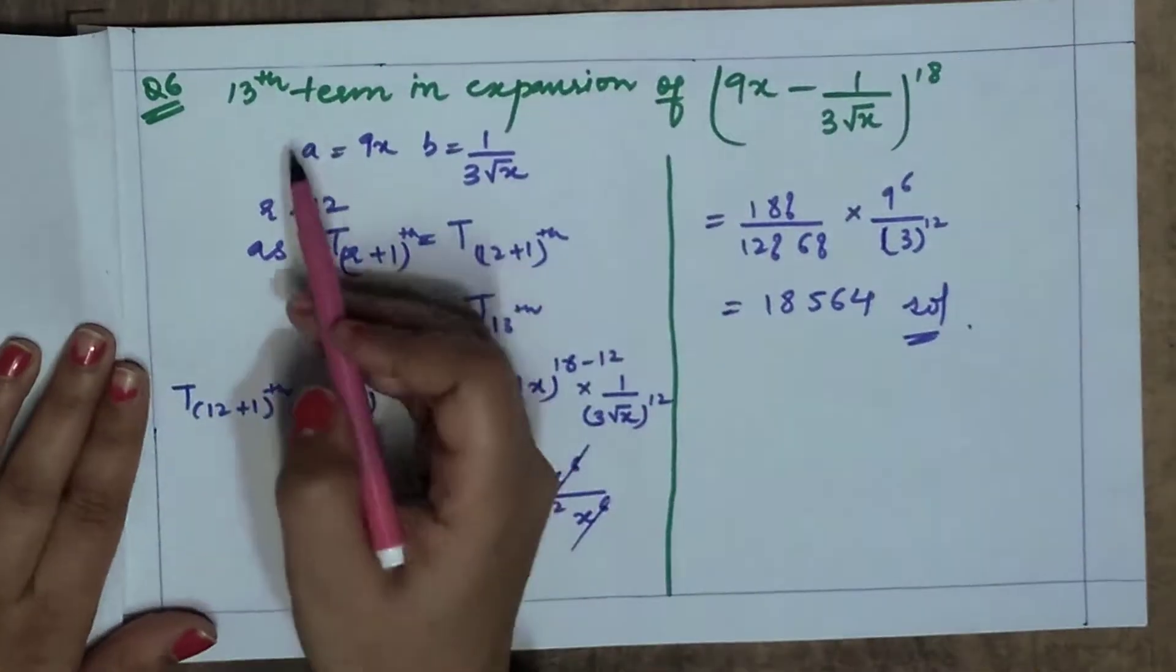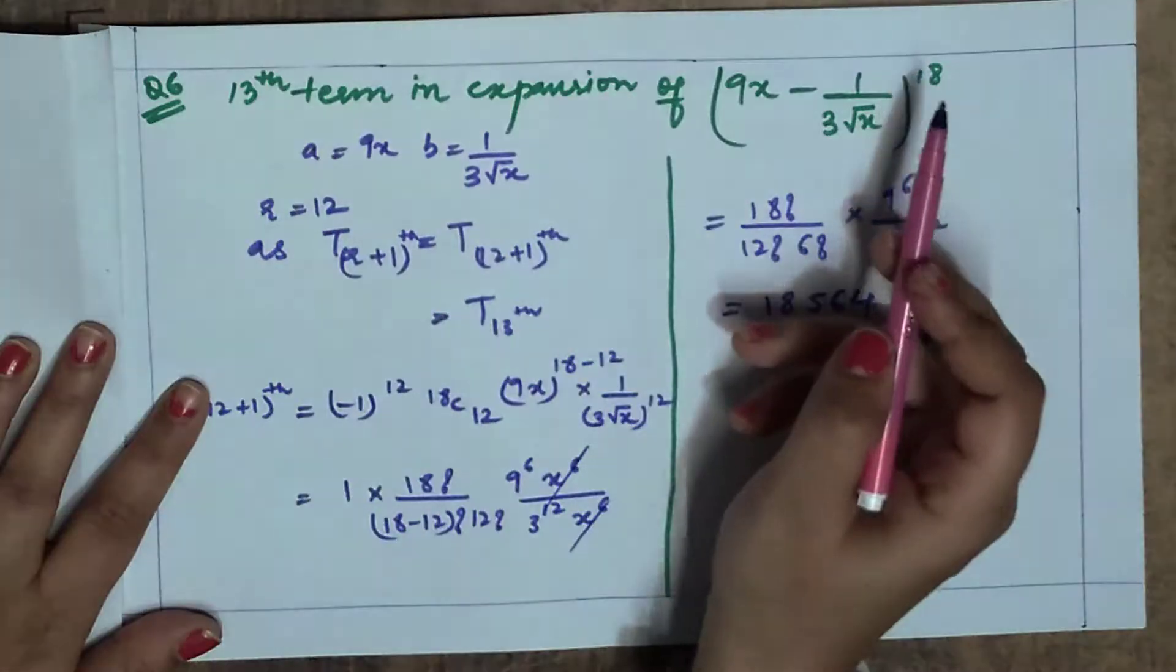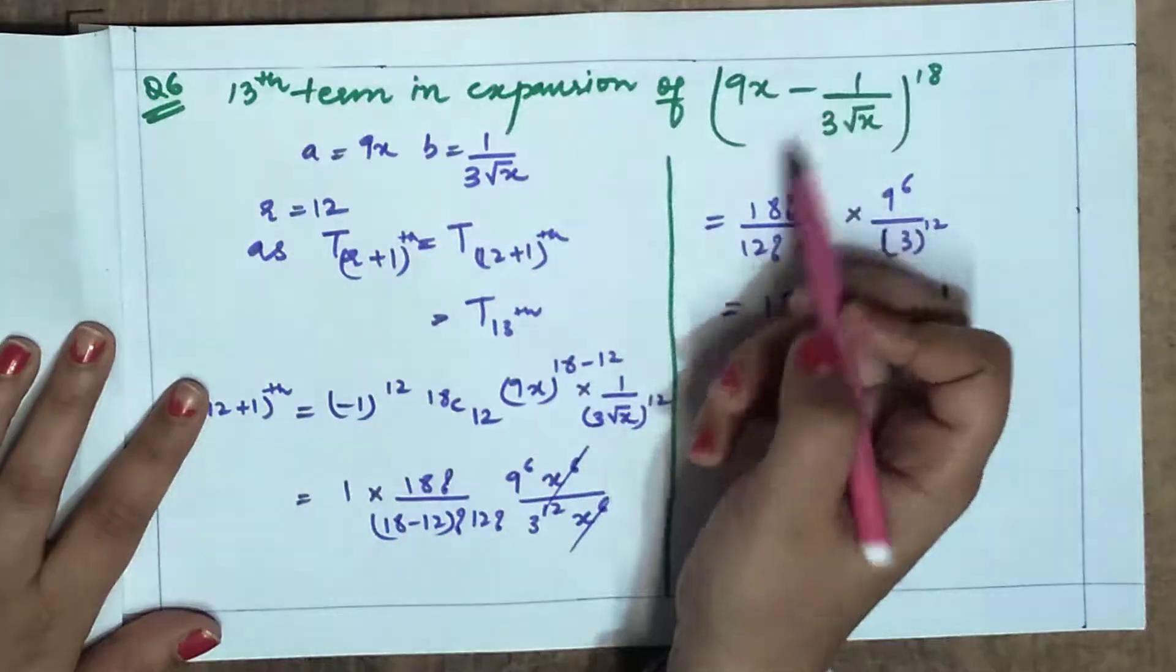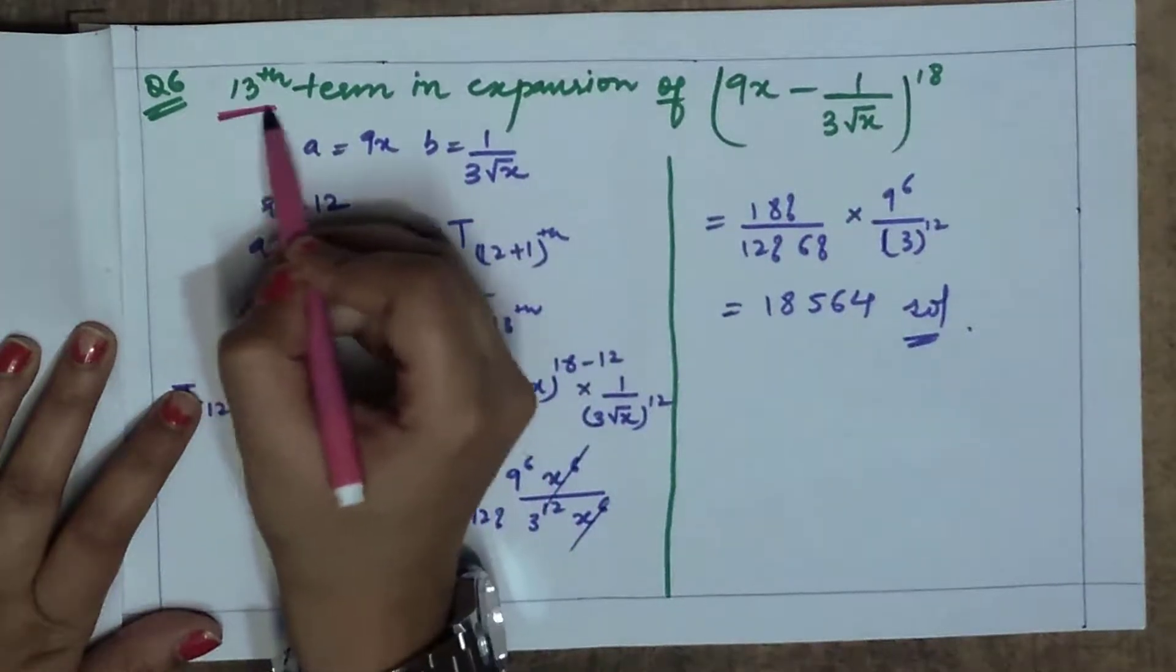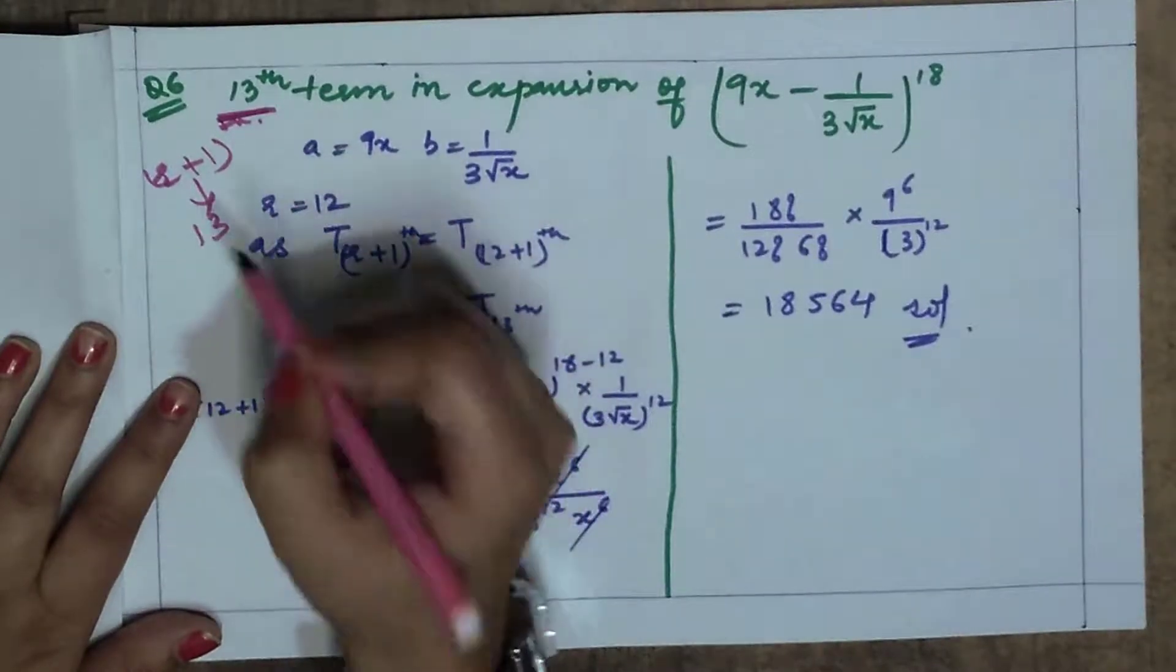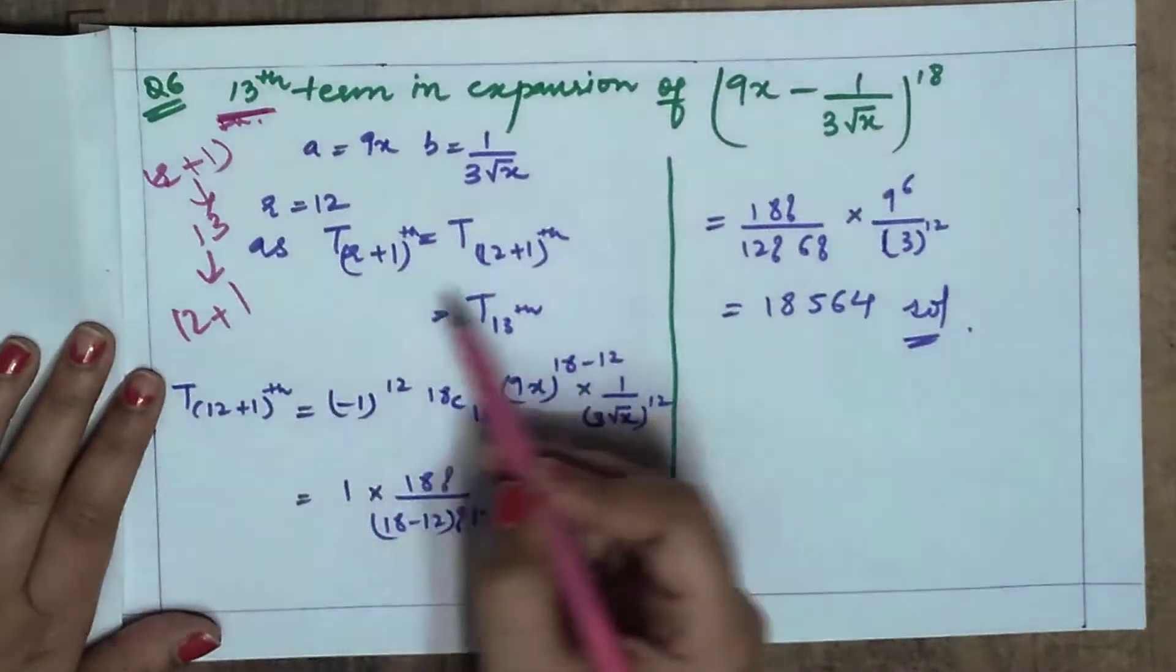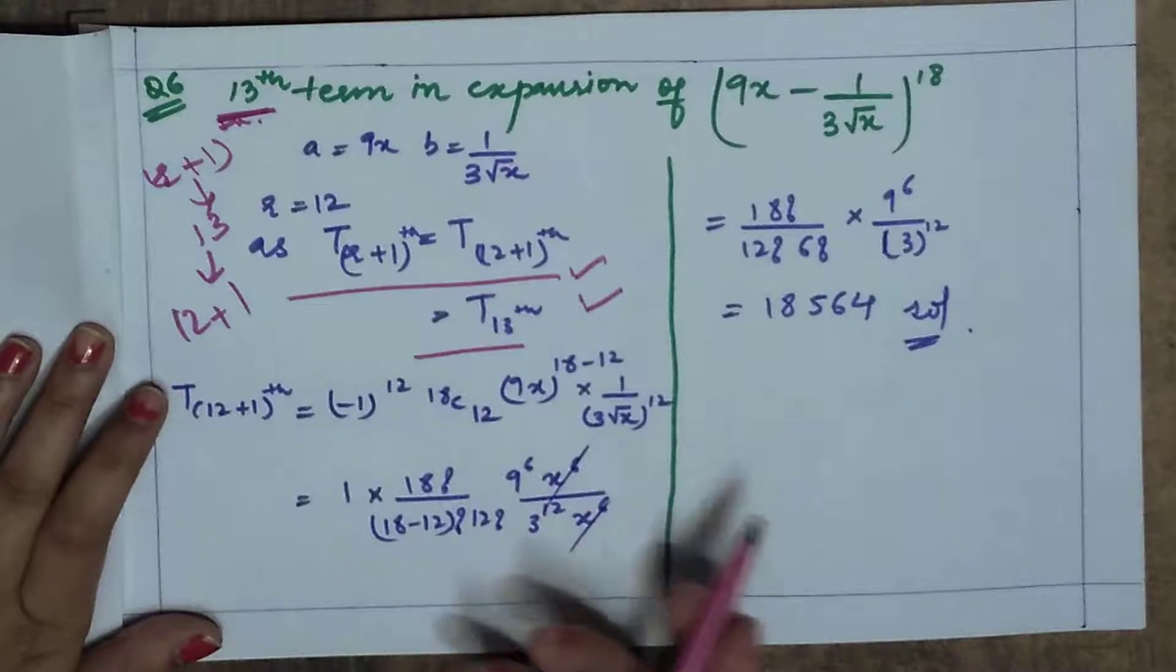Same question - the next is the same. So this is the 13th term in this expansion. A value is 9x, B value is given as 1 upon 3 root x. R value is 12. Why? Because it is 13th. So 13th means r plus 1th term. How can I write this as 13? 12 plus 1. So I have told you, simple, you can add r value 12.